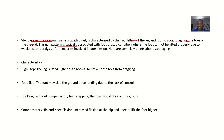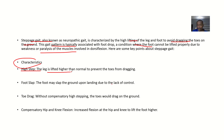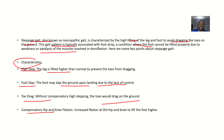The gait pattern is typically associated with foot drop, which is a condition where the foot cannot be lifted properly, due to either weakness or paralysis of the muscles involved in dorsiflexion. The characteristics of this gait include: a high step — the leg is lifted higher than normal to prevent the toes from dragging on the floor; foot slap — the foot may slap the ground upon landing due to lack of control; toe drag — without compensatory high stepping the toes would drag on the ground; and compensatory knee and hip flexion — increased flexion at the hip and knee when trying to lift the foot higher.